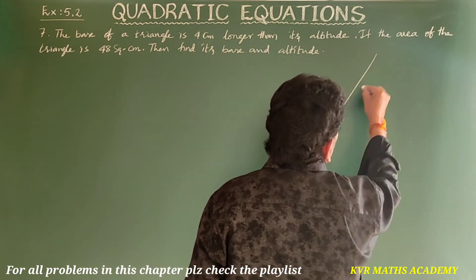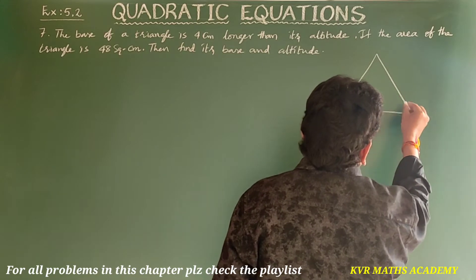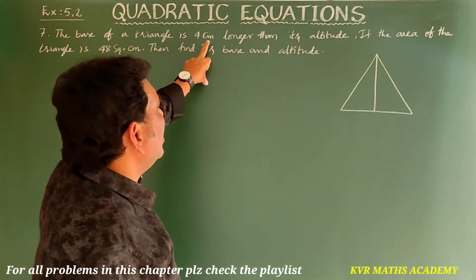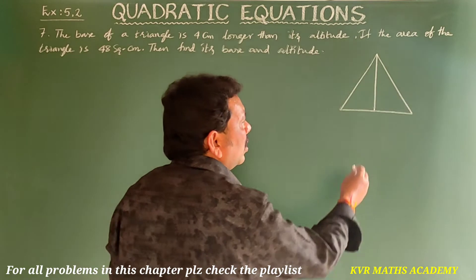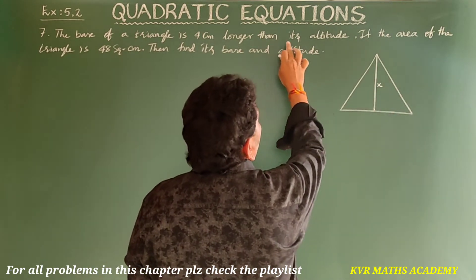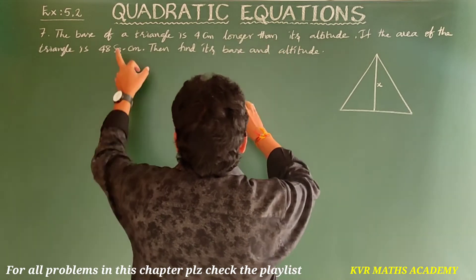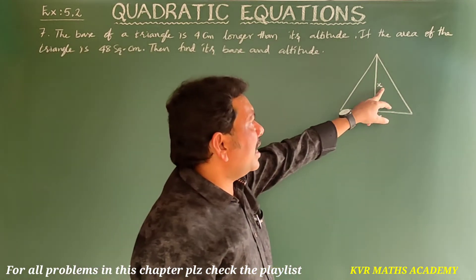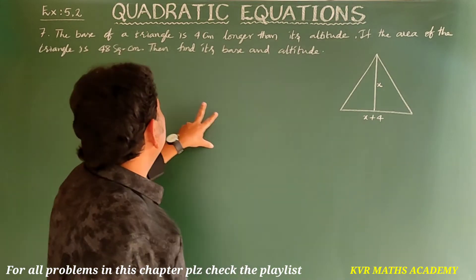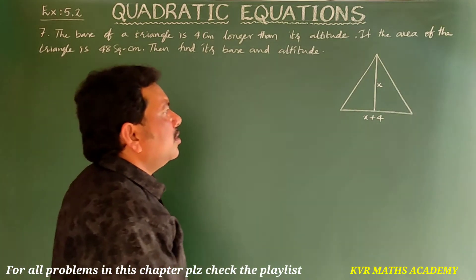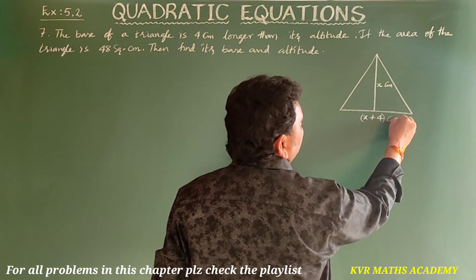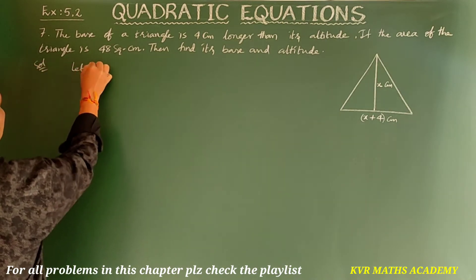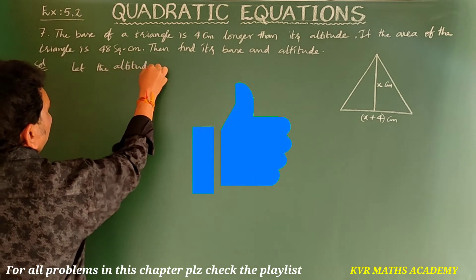Let's draw a diagram. The base of a triangle is 4 centimeters longer than its altitude. Suppose the altitude is taken as x centimeters, then its base is equal to x plus 4 centimeters.